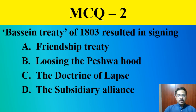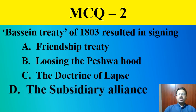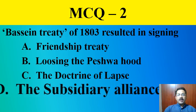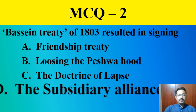MCQ question number two: The Bassein Treaty of 1803 resulted in — A. signing a friendship treaty, B. losing the Peshwahood, C. the Doctrine of Lapse, D. the Subsidiary Alliance. The correct answer is the Subsidiary Alliance.